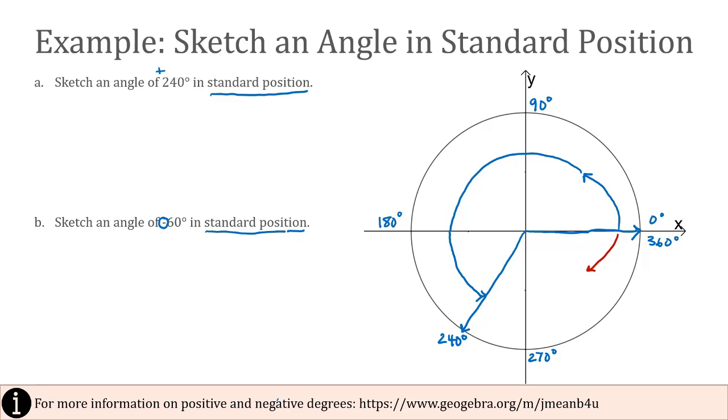Negative 60 degrees is not very far into the fourth quadrant. In fact, if 90 degrees puts us up in the first quadrant, then 270 degrees could also be called negative 90 degrees. So negative 60 degrees is just going to end somewhere about right here in that fourth quadrant.